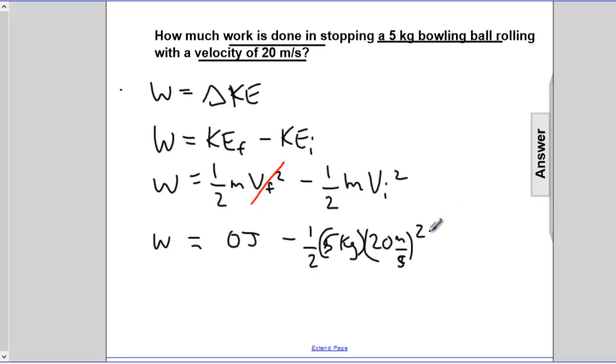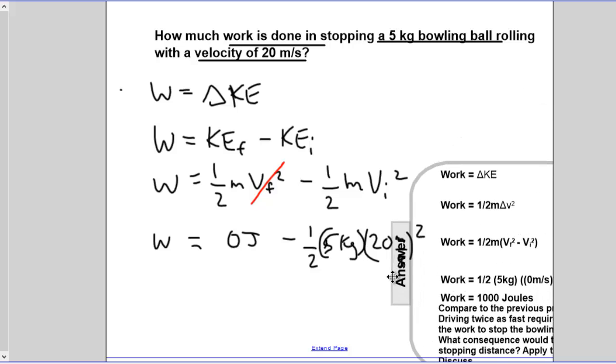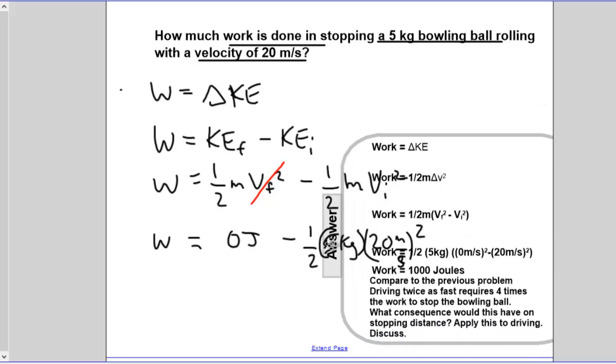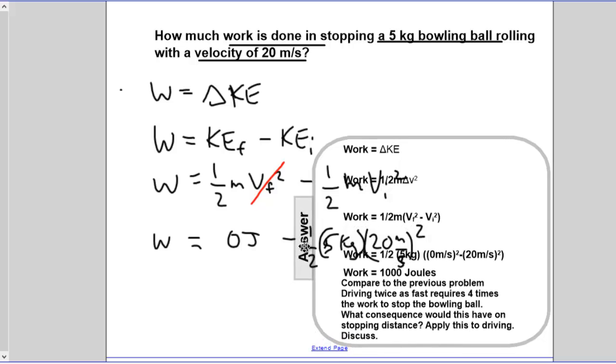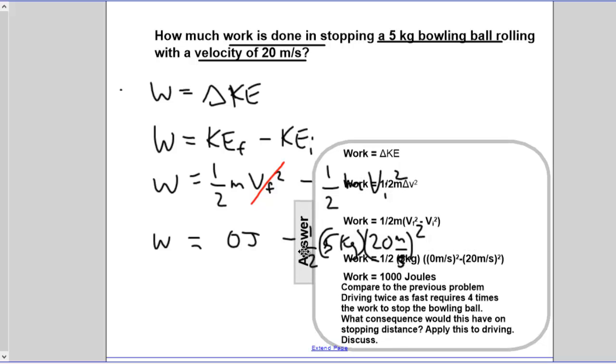20 squared is 400, divided by 2 is 200, times 5 is 1,000 joules. So it requires 1,000 joules of work to stop this bowling ball.